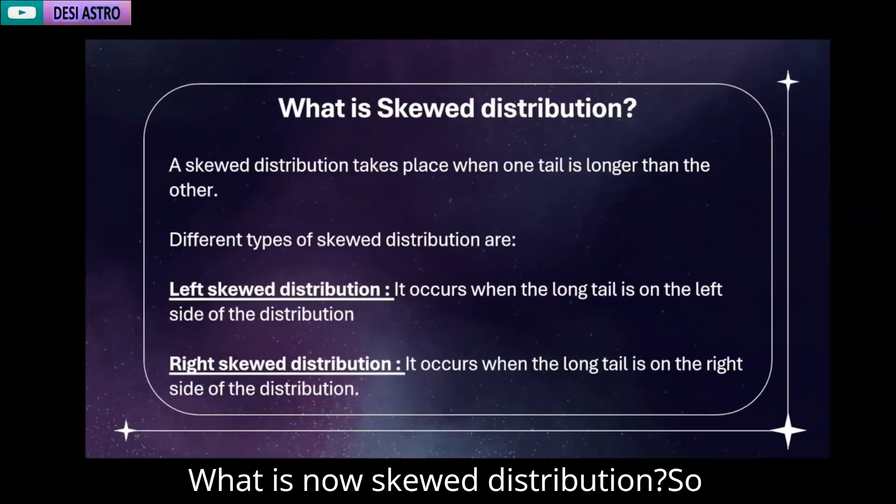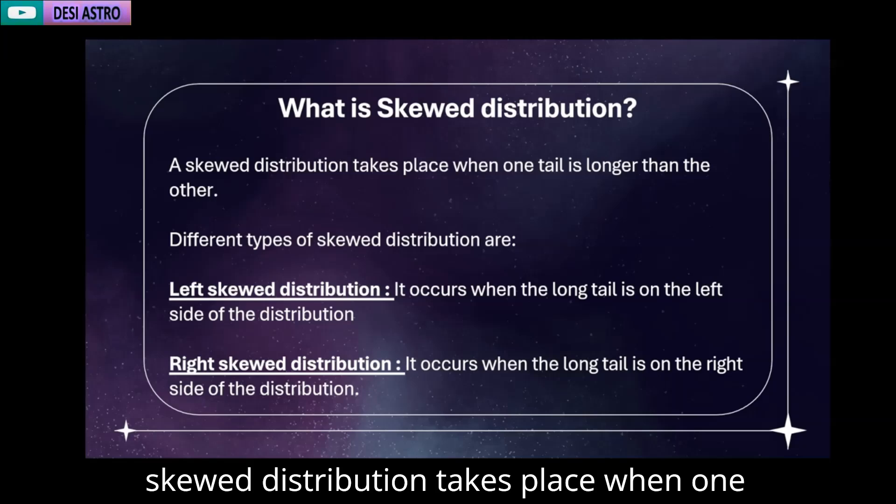What is skewed distribution? Skewed distribution takes place when one tail is longer than the other. There are different types of skewed distribution.